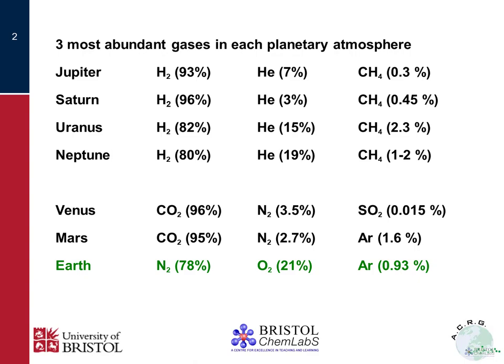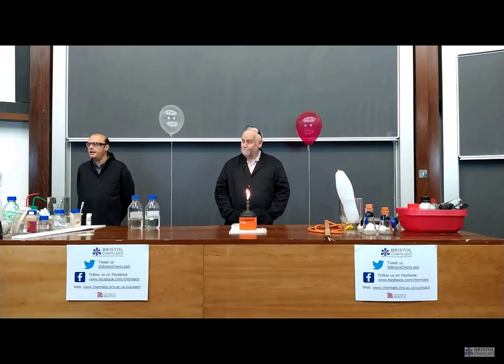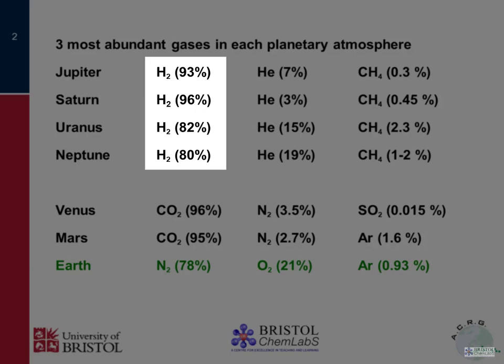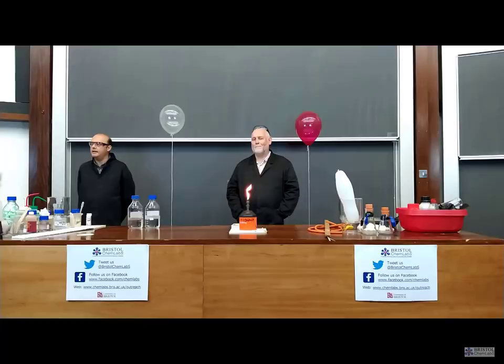To put everything in context, let's think about the composition of the planets in our solar system. The giant gas planets - the Jovian systems - Jupiter, Saturn, Uranus and Neptune - vary in composition but share the same bulk constituents. They're mainly hydrogen H2, with some helium He, and the other gas of note in their atmosphere is methane, CH4.